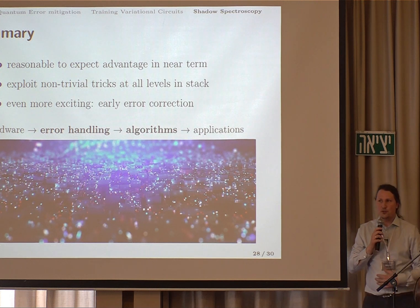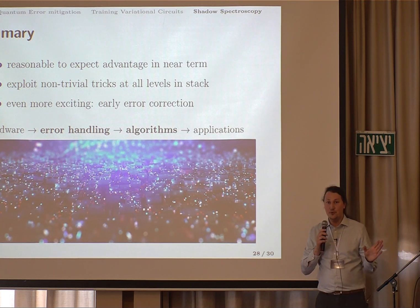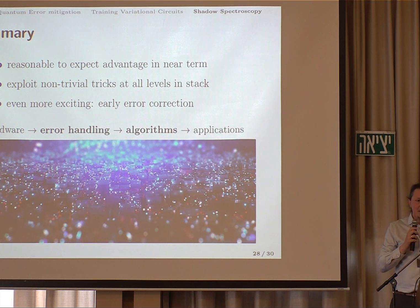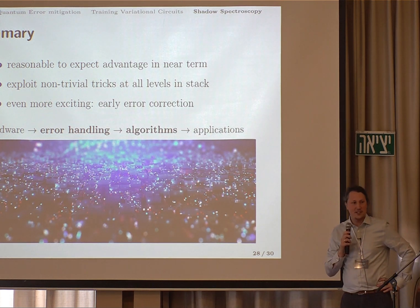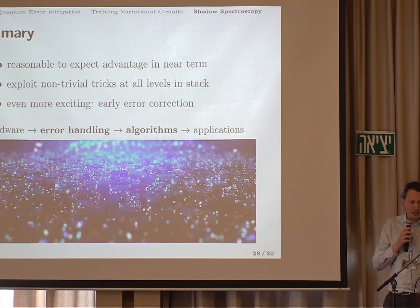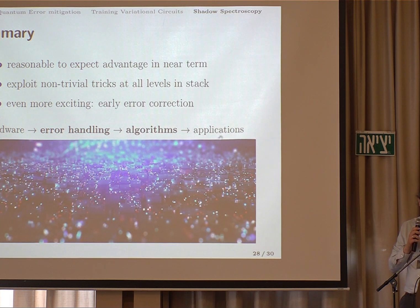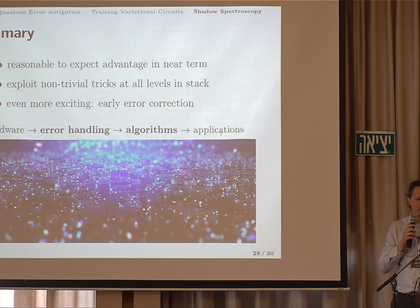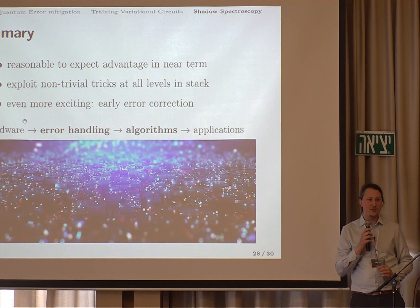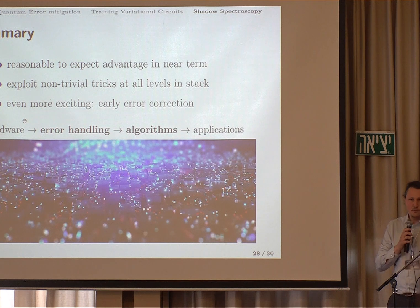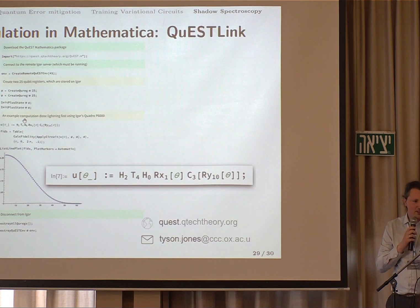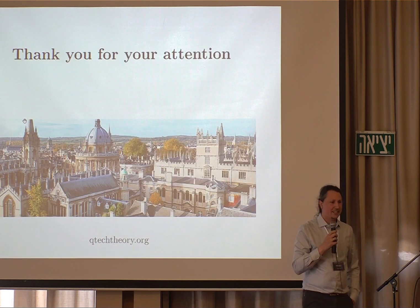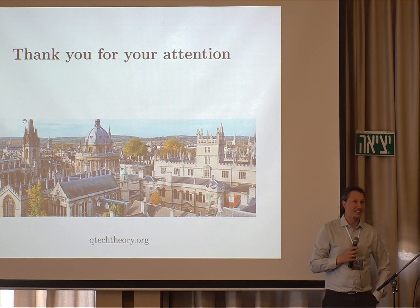I hope I could convince you that it's reasonable to expect some form of quantum advantage. It's not trivial to pinpoint which problems we will achieve that for, but we will definitely need to exploit all kinds of tricks and techniques — not just at these two levels of the stack I've talked about, but also finding the right kinds of applications where classical computers are not good enough and quantum computers are. We also just need hardware improvements, better gates to achieve that. But it seems we are getting there soon. Check out Questlink if you're interested in this quantum simulator. Thank you.